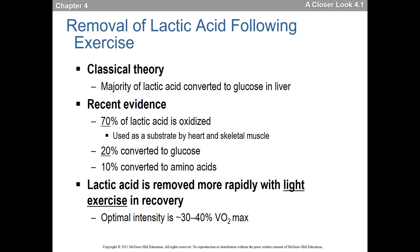After we make lactic acid, how do we get rid of it? There are two things. The classical theory: the majority of lactic acid is converted to glucose in the liver through something called the Cori cycle. Whenever we make glucose from something that isn't a carbohydrate, it's called gluconeogenesis. So converting lactic acid into glucose is also gluconeogenesis — creation of new glucose.